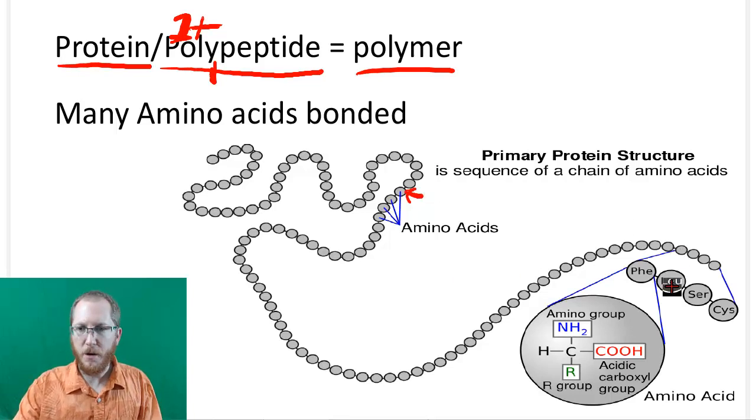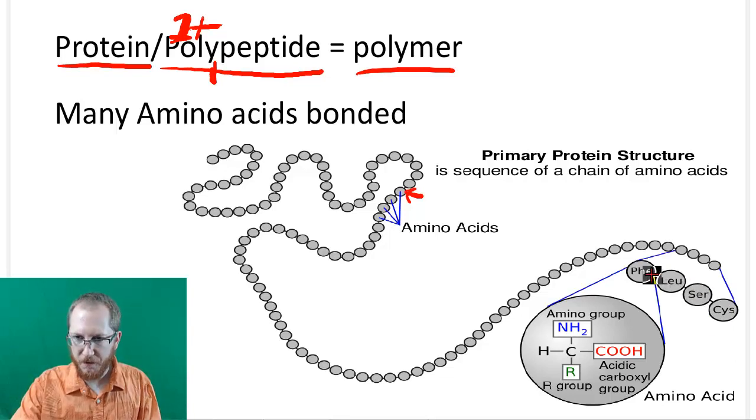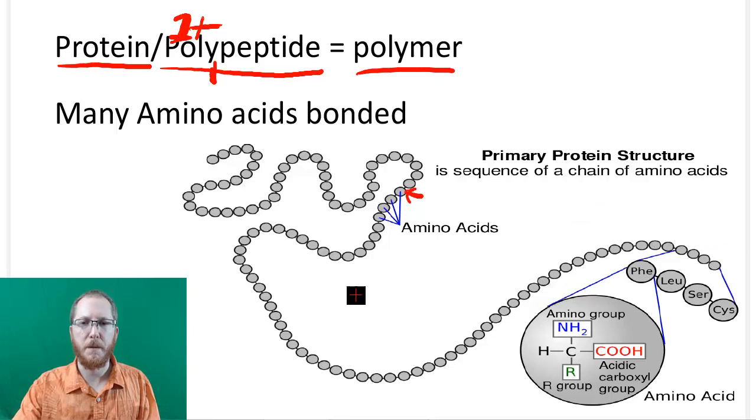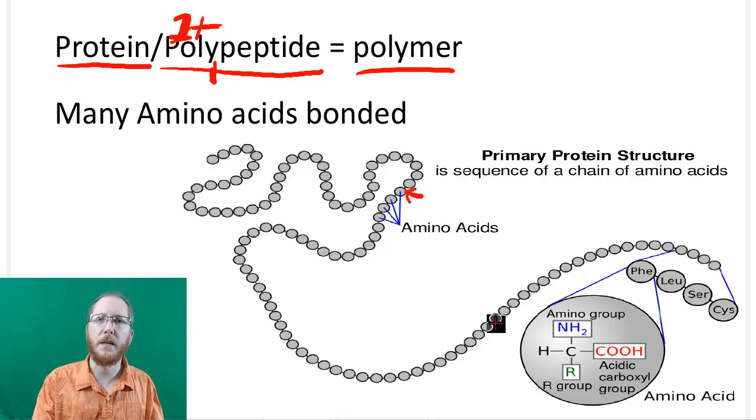And so you'll see these amino acids and it's kind of listed some of them. You don't have to memorize the actual names, but these can be different types. And they're just going to bind to each other in this long chain. And this will be the simplest structure of a polypeptide or a protein.